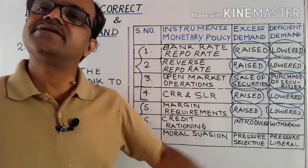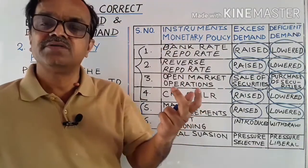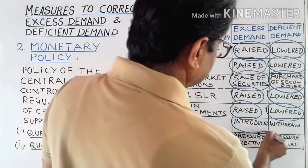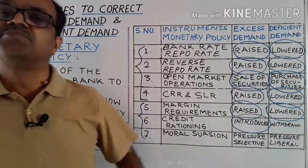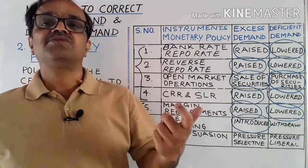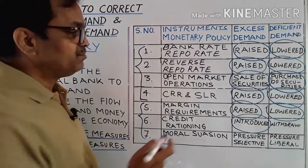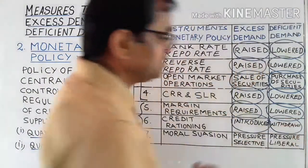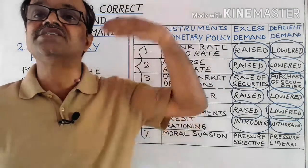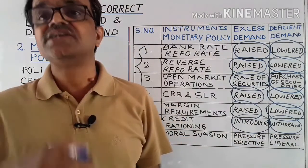The sixth instrument is credit rationing — fixing a quota on the maximum amount of loan that can be advanced by a commercial bank. During excess demand, the central bank introduces credit rationing and fixes the quota, checking the amount of money supply and decreasing aggregate demand. During deficient demand, credit rationing is withdrawn so that more money flows into the economy to increase aggregate demand.